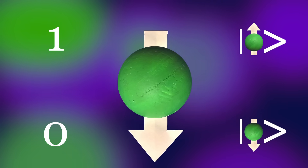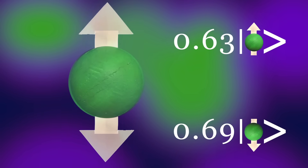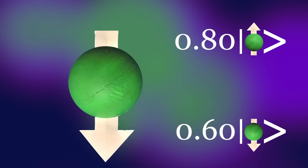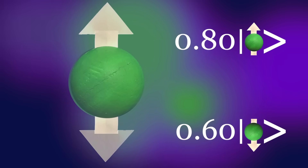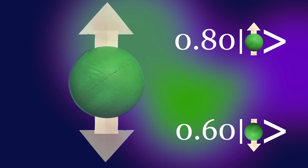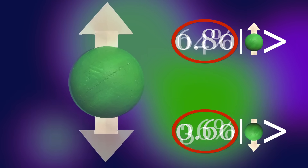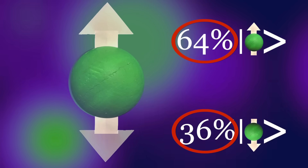But the funny thing about quantum objects is that they can be in both states at once. When you measure the spin, it will be either up or down. But before you measure it, the electron can exist in what's called a quantum superposition, where these coefficients indicate the relative probability of finding the electron in one state or the other.